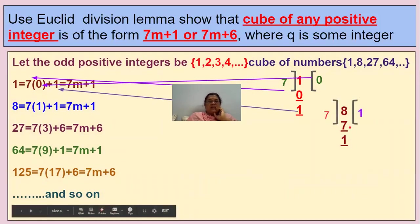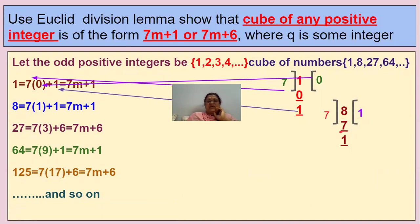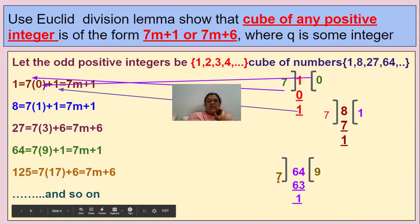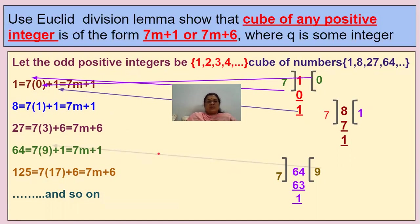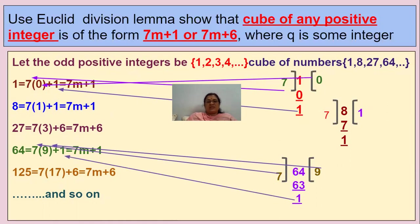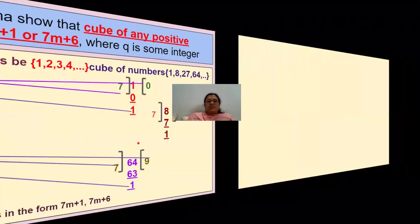Take 8: divide by 7, seven ones are 7, remainder 1. So 8 = 7 × 1 + 1, which is in the form 7m + 1. Take 64: divide by 7, seven nines are 63, remainder 1. So 64 = 7 × 9 + 1, again in the form 7m + 1. Looking at all these, the cubes are in the form 7m + 1 and 7m + 6.